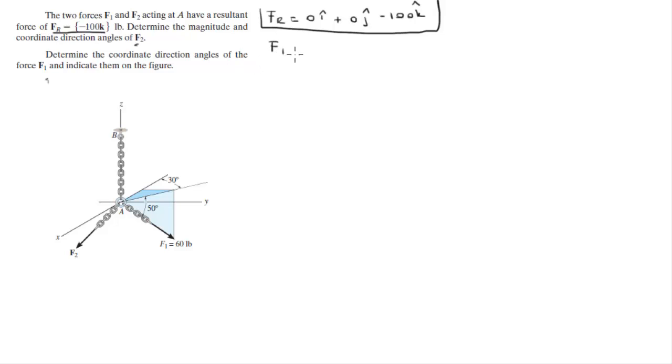We gotta find F of 1. F of 1 has an x component, a y component, and a z component, but F of 1 also has a projection into the x and y plane and it's what we're going to find first to be able to find the x and y values. This projection can be found by doing F of 1 cosine of 50. As you can see, F of 1 forms a 50 degree angle with this projection given right here, which is equal to 38.6.